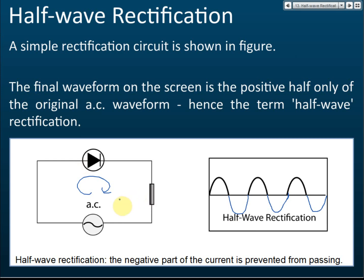Below the line, the current moves counterclockwise. So alternating current keeps changing the direction of flow: clockwise, counterclockwise, clockwise, counterclockwise. The current increases, decreases, becomes zero, then increases again and decreases to zero repeatedly. This is alternating current.